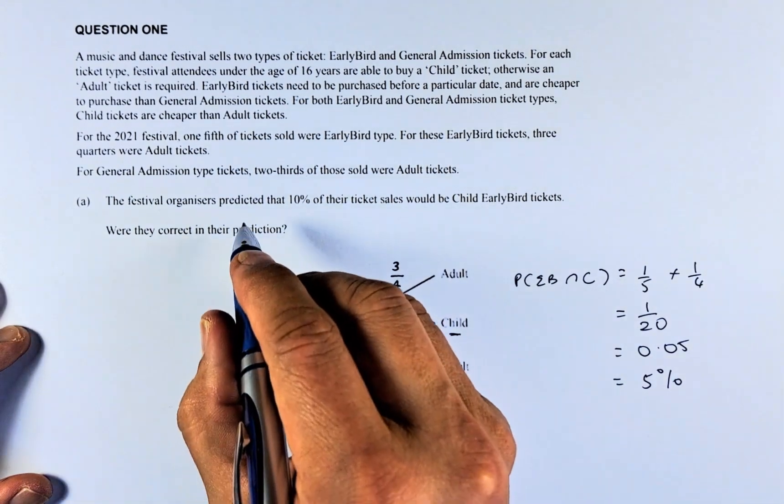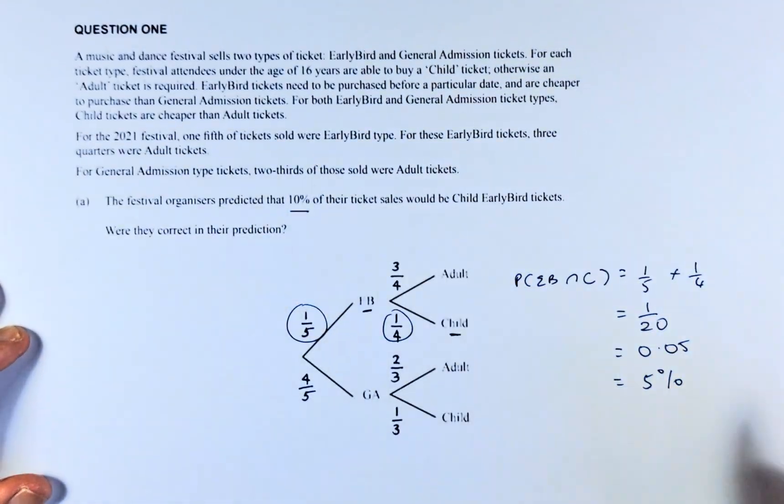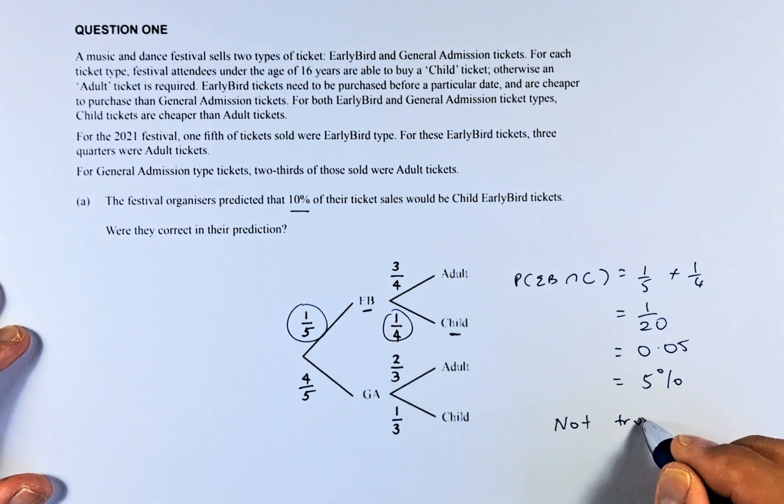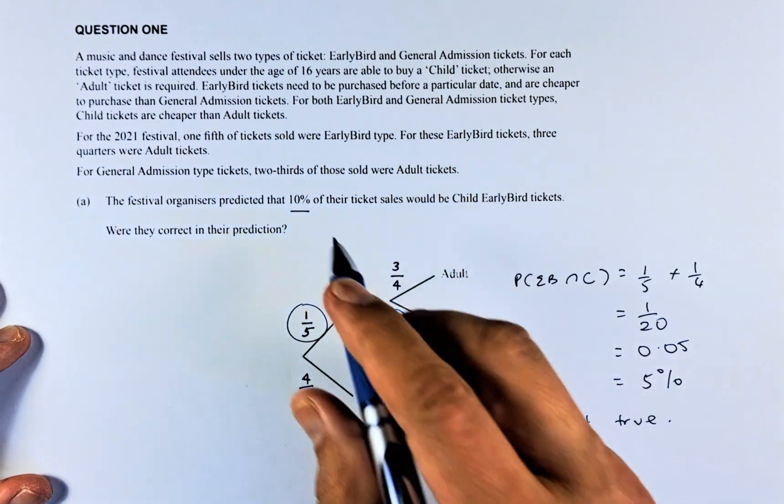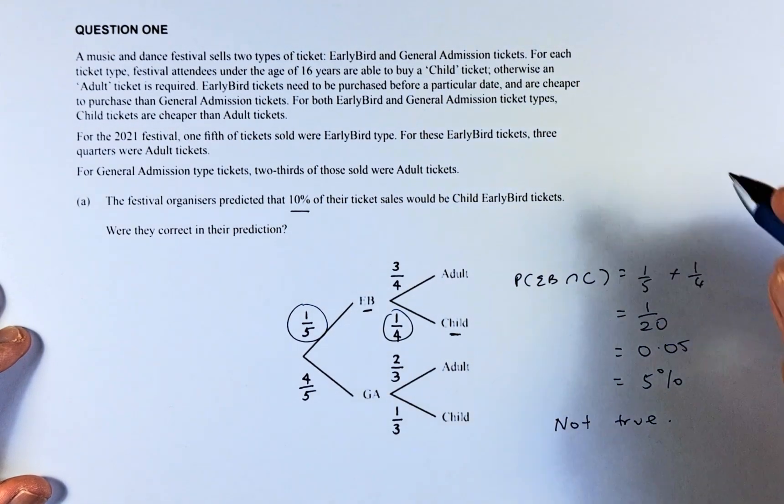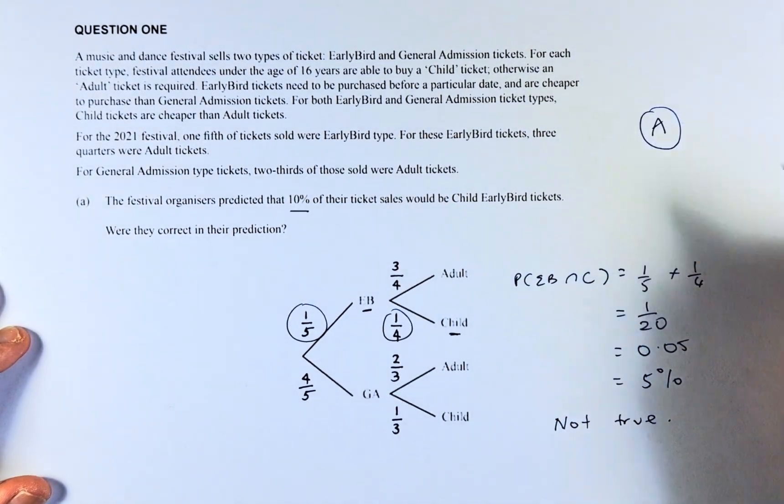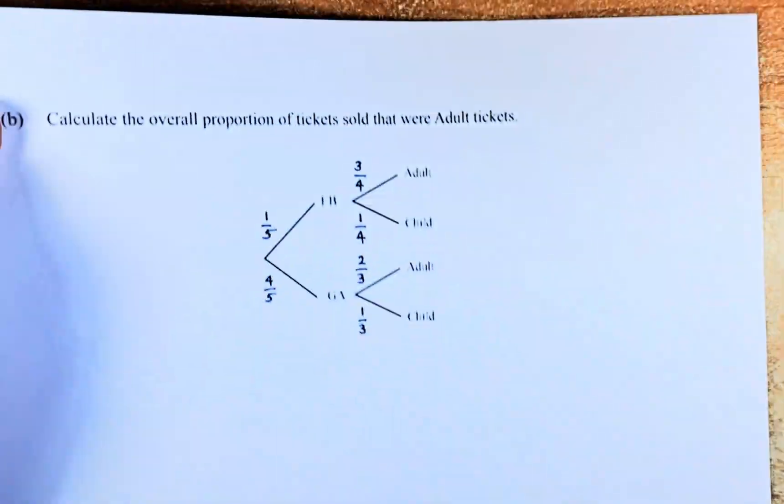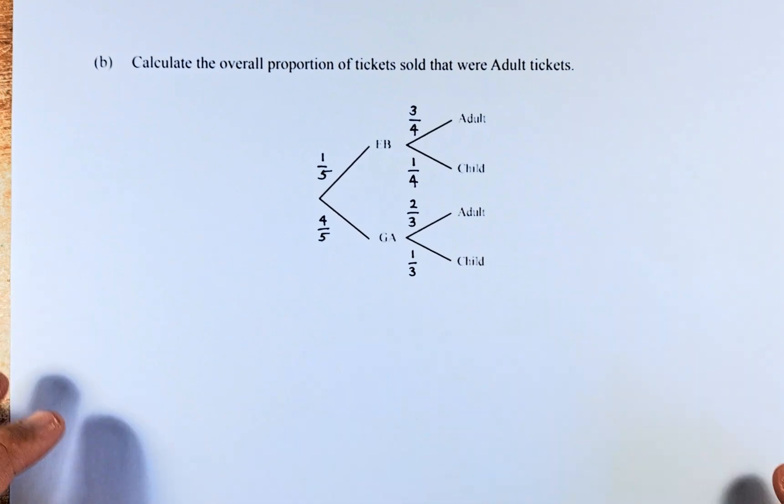So the question is, the organiser predicted that 10% of the tickets were child early bird. So the answer is not true because what we calculated is only 5% instead of 10%. If you can answer that, that will be an Achieve in this paper. Great. Now we shall do question 1B. The same probability tree.